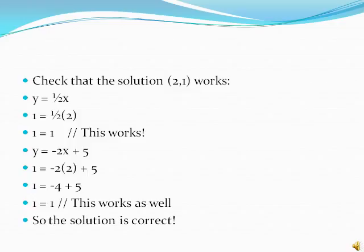Now checking, we plug those values back into both equations. We have the ordered pair (2, 1). When we have y equals one half x, we plug those values in and get 1 equals one half times 2. Well, one half times 2 is 1, so 1 equals 1. That's correct.